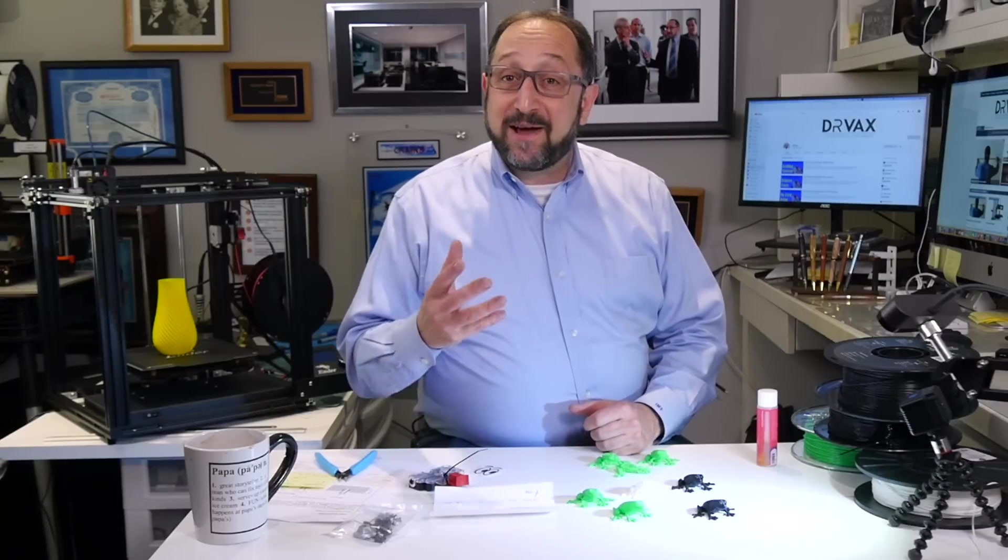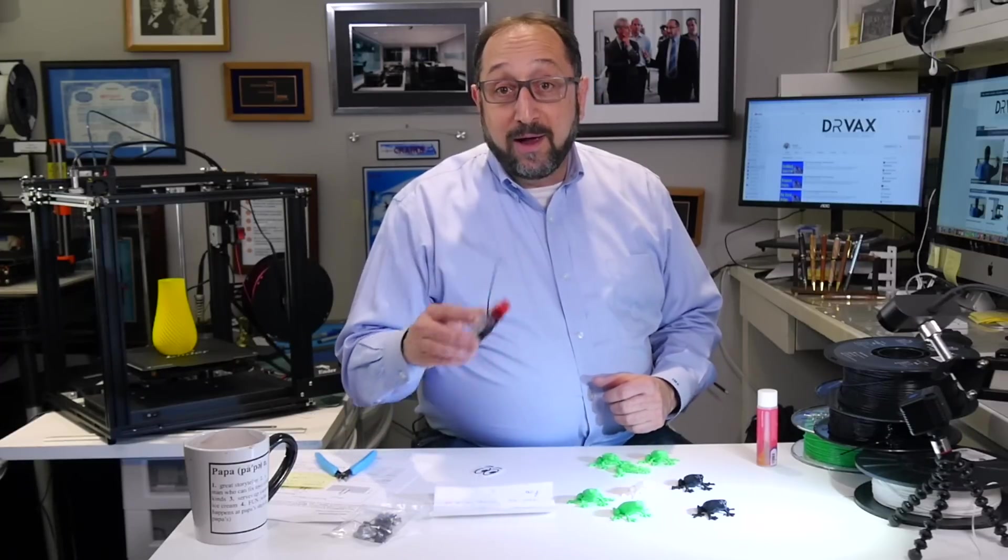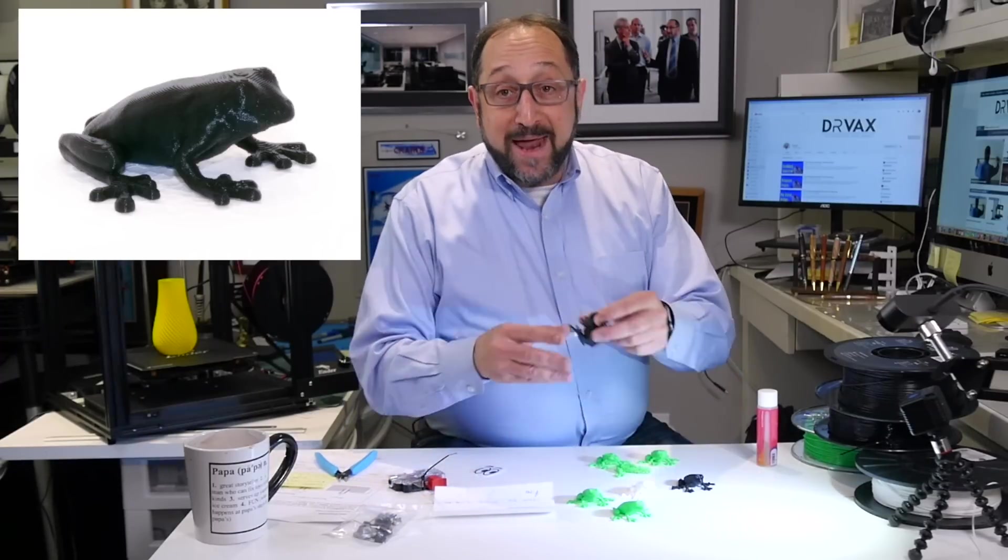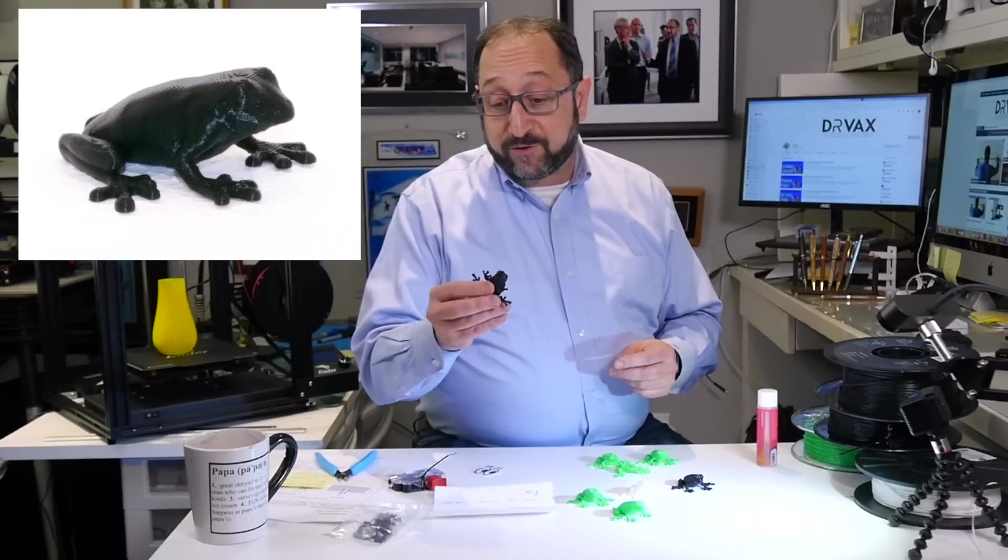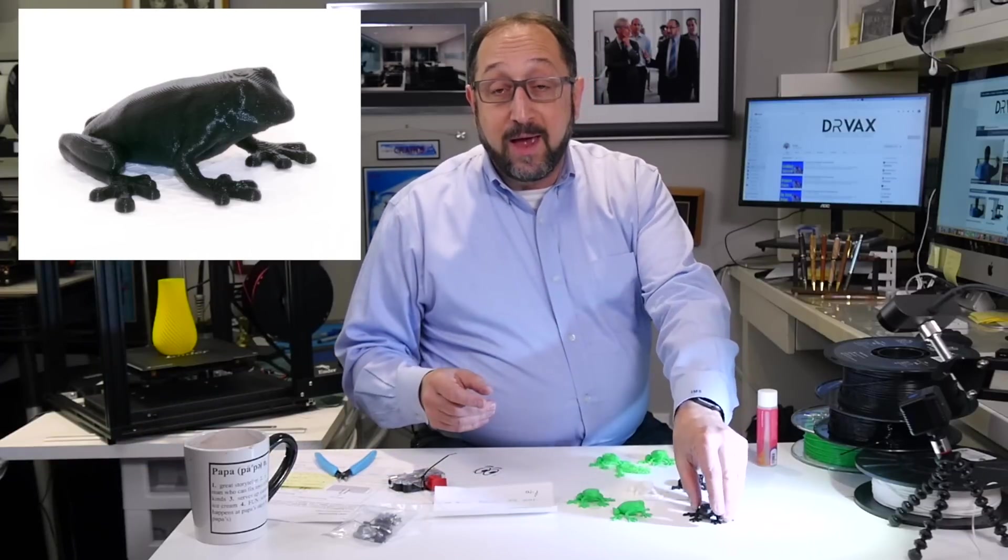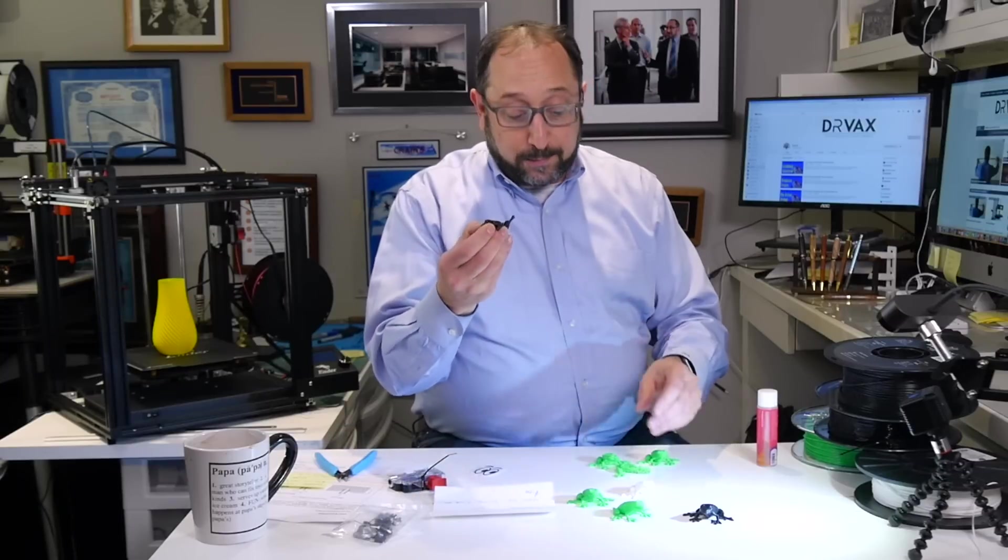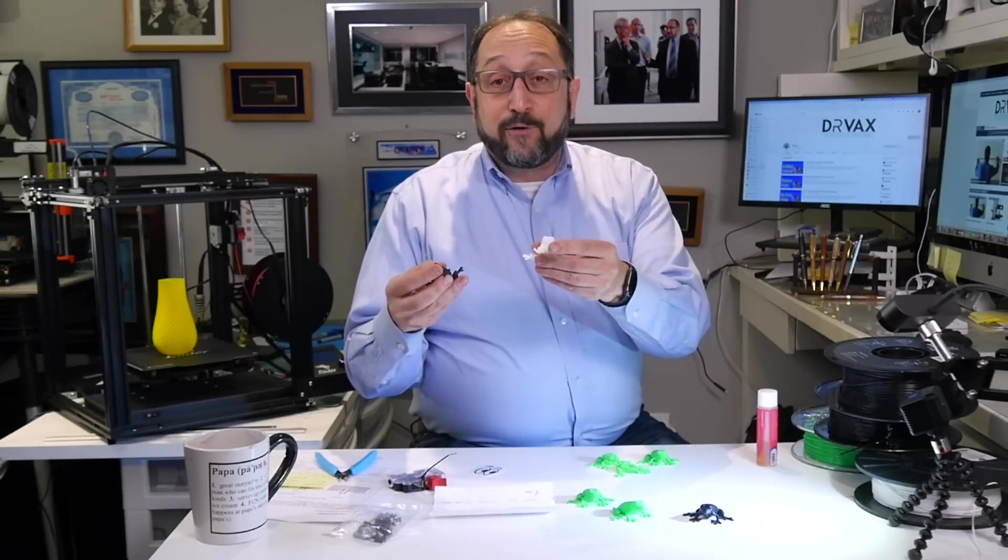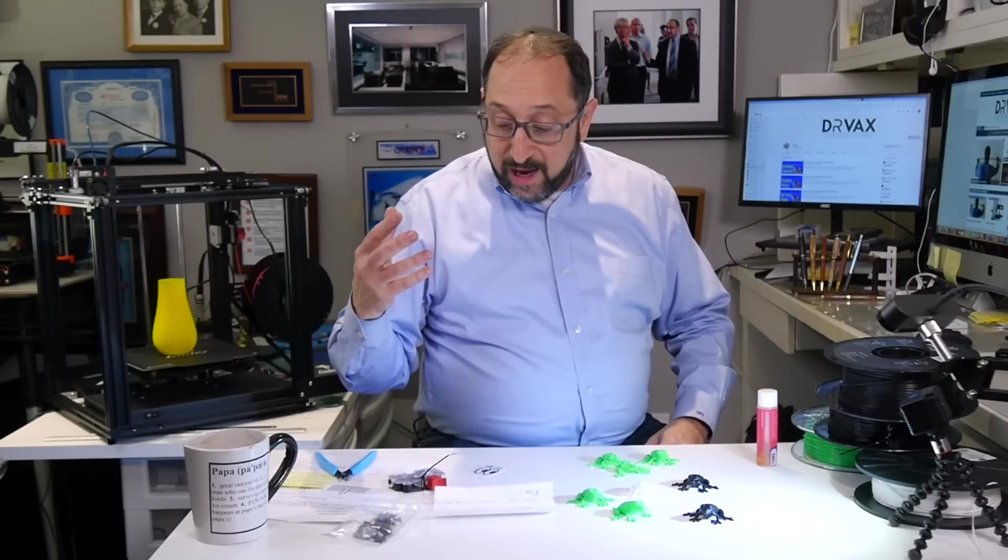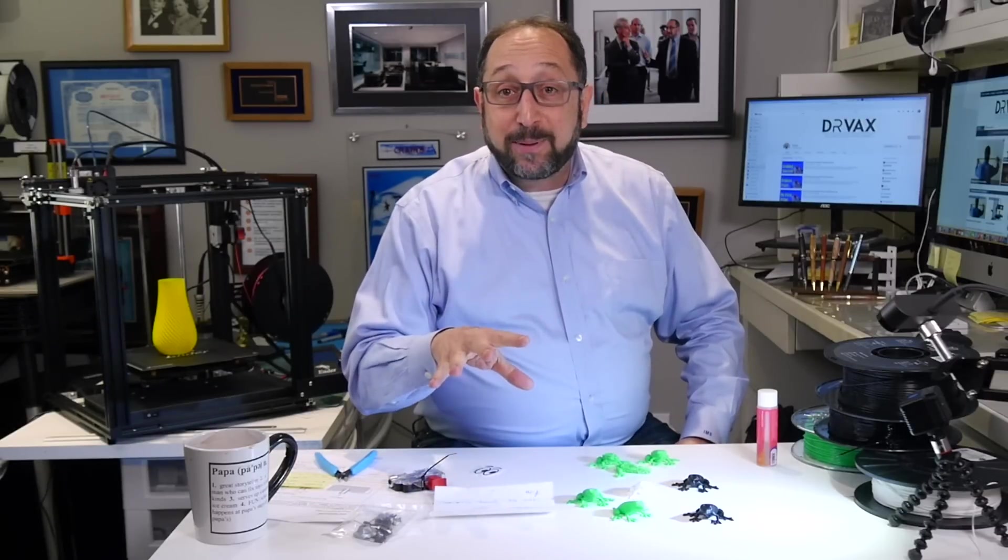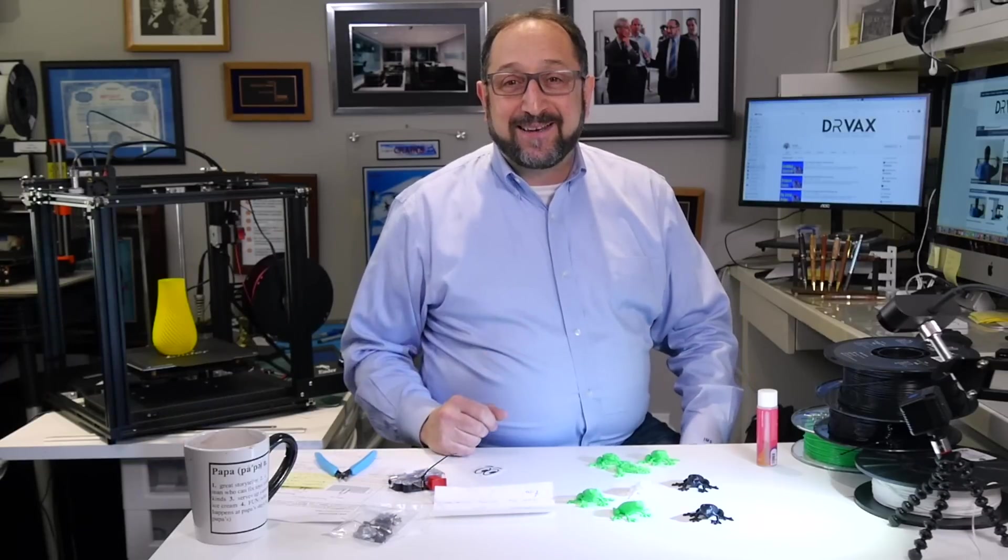Hi, this is Herb Shiro with the Dr. Vax channel. Today we're going to talk about upgrading your Ender 5 with a new extruder that both does a better job with regular filament, really the best prints I've seen off my Ender 5, but also gives you the ability to print flexible filaments in a variety of shore hardnesses. And we'll explain what the shore hardness scale is and how it applies to filaments. So stay tuned and let's learn something together.